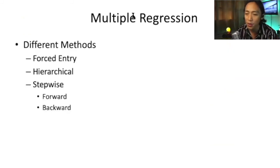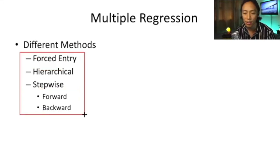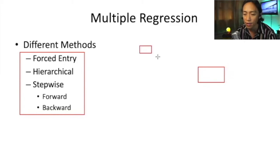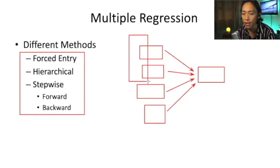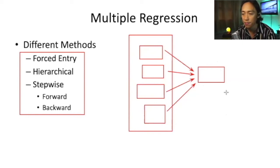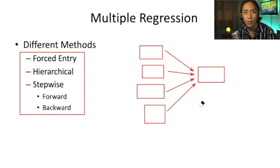Another important thing to learn about multiple regression is that there are several methods of entering the dataset: forced entry, hierarchical, and stepwise regression. In forced entry, if we have four predictors, we simultaneously enter all four as predictors of the outcome variable. Sometimes, however, you want a certain order to how variables are entered in the analysis, which is where hierarchical regression comes in.